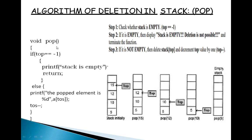Here is the code implementation for the pop operation. If top equals minus 1, print the message 'stack is empty' and exit without performing any pop operation. Otherwise, the popped element is a[top] — note there is a typo in the code that says 'toss' but it should be 'top' — so a[top] is popped and then the top value is decremented by 1, that is top--.